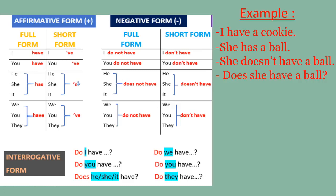Now let's look at some examples. 'I have a cookie' — we use 'have' because the subject is 'I'. 'She has a ball' — we use 'has' because the subject is 'she'. In the negative: 'She doesn't have a ball.' In the question form: 'Does he have a ball?' I hope you understand how to use 'have' and 'has' clearly.